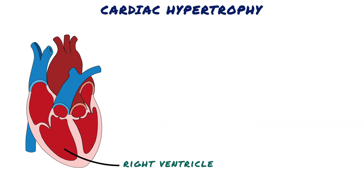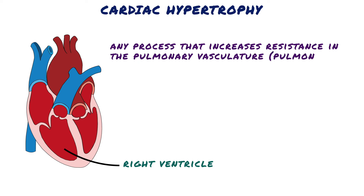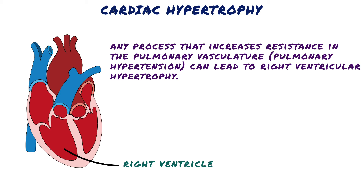What causes right ventricular hypertrophy? Using the same logic, since the right heart ejects into the lungs, any process that increases resistance in the pulmonary vasculature — pulmonary hypertension — can lead to right ventricular hypertrophy. If any process increases the resistance that the heart must pump against, the heart will have to work harder to squeeze and can eventually grow big and thick. Although this growth may initially be compensatory, it eventually reaches diminishing returns.